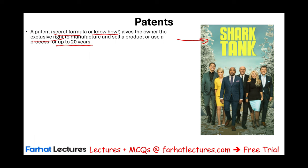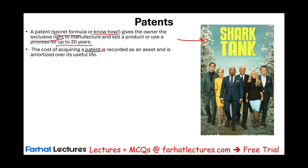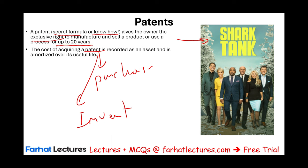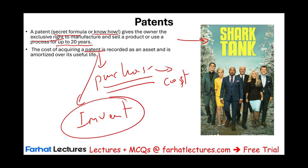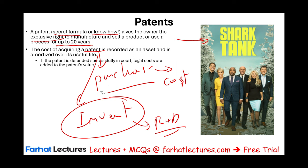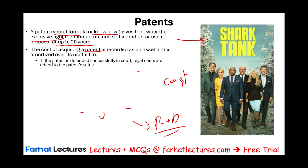A patent is an intangible asset — you cannot see it or touch it, but it's granted by law. The cost of acquiring a patent is recorded as an asset. There are two ways to get a patent: you can purchase it or invent it yourself. When you purchase the patent, you record it at its cost. If you invented a patent, any research and development costs you incur are expensed. But if you buy it, it is recorded at cost, if the patent is defended successfully in court.